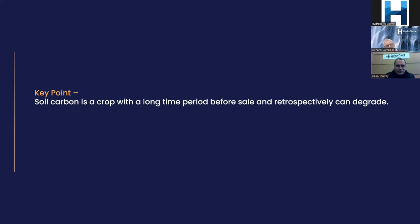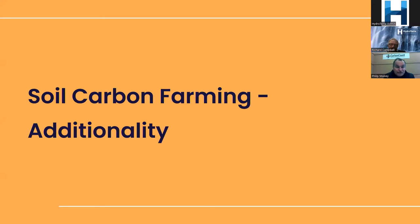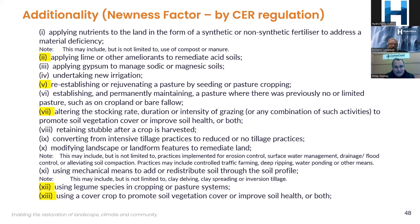The key point is that soil carbon is a crop with a long time period before sale and can retrospectively degrade. For soil carbon farming, the things you're required nationally to achieve are: additionality — the newness factor as it's called by the CER. Regardless of what you think can stop CO2 equivalent emissions, such as an inhibitor of nitrification, these are the only ones allowed by law currently in Australia. Those highlighted are the ones most often used by farmers. Anyone who has already commenced regenerative practices is penalised by the fact that they can't claim the carbon unless they make another modification as noted on the list of items 1 to 13.